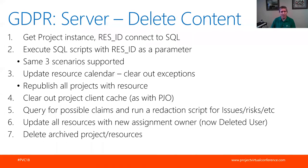The deletion process is very much the same. You'd go through the ResID, update the resource calendar, clear out exceptions, republish all projects with the resource, clear out the project client cache - same as we did for Project Online - for any client that may have opened that project. Query for all possible claims, run a redaction script for issues and risks, update all resources with the new assignment owner since that person is now a deleted user, and then delete archive projects and resources that you'd identified as having that resource in.